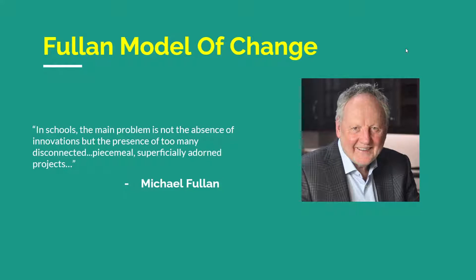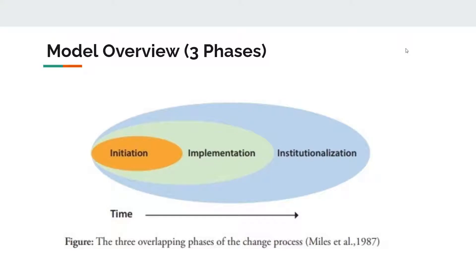Fullan's model, the III Change Model, endeavors to create a much more connected process to introducing change, specifically in educational environments. One way to visualize Fullan's model is with three overlapping circles consisting of the model's three phases: initiation, implementation, and institutionalization.